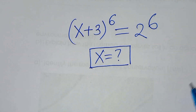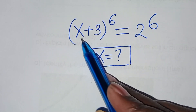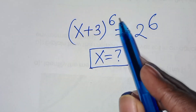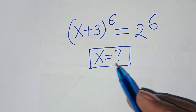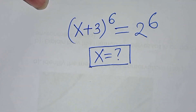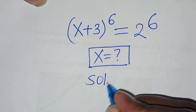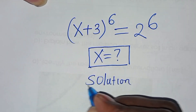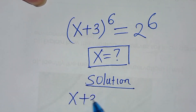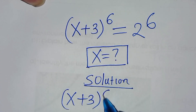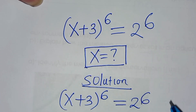Hello everyone, you are welcome to solve this nice exponential equation, which is x plus 3 raised to the power 6, this is equal to 2 to the power 6. What is the value of x? We have x plus 3 raised to the power 6, this is equal to 2 to the power 6.